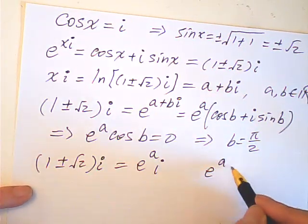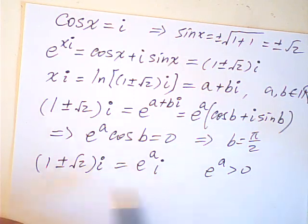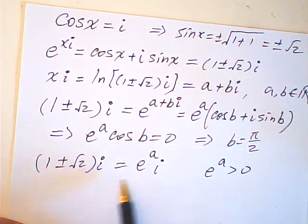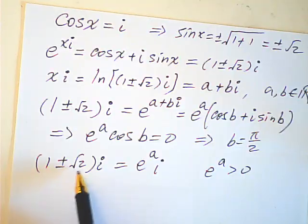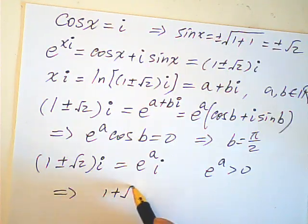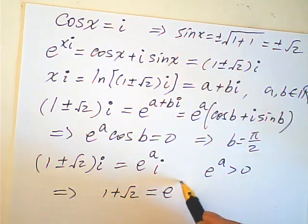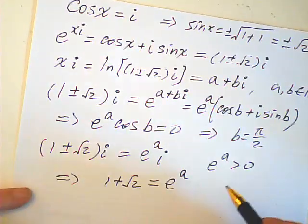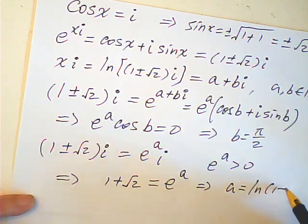Now, we know that e to the power of a is positive because a is a real number. If this is positive, therefore, this must be positive. So, negative root 2 is not possible, which means 1 plus root 2 is equal to e to the power of a. Okay. We have found that a is equal to natural log of 1 plus root 2.